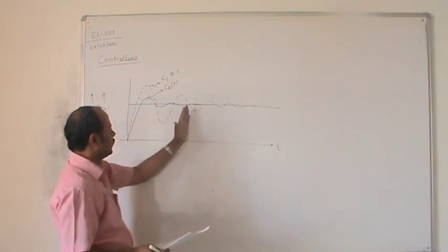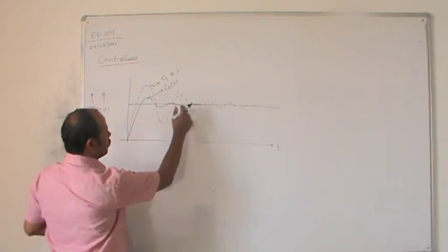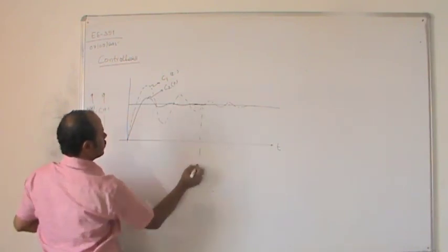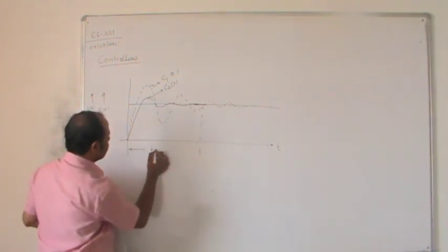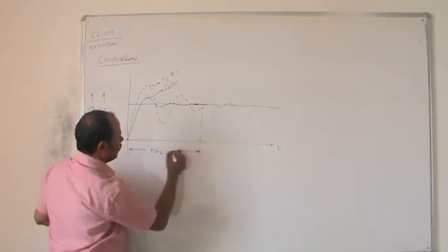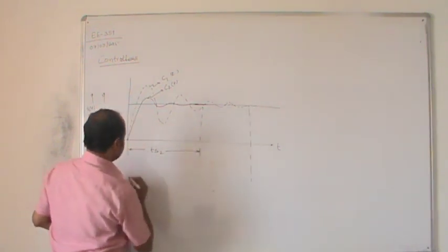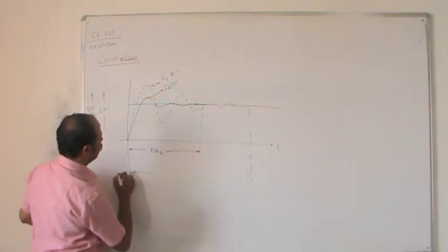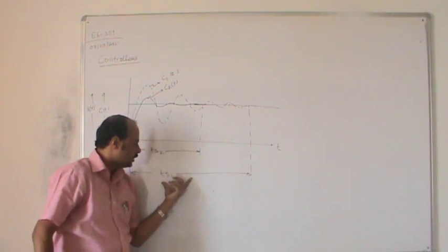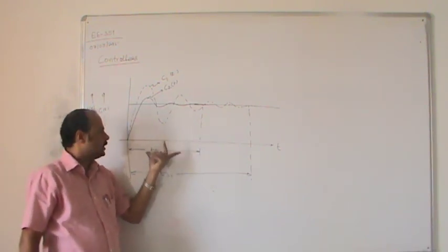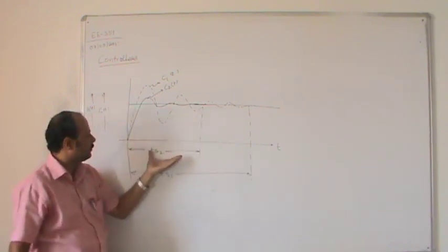Settling time is the time required to reach the steady state condition. For system 2, it reaches steady state very soon — we call this TS2. For system 1 we get TS1. In this case, TS1 is larger than TS2, meaning system 1 is taking more time to reach steady state compared to system 2.